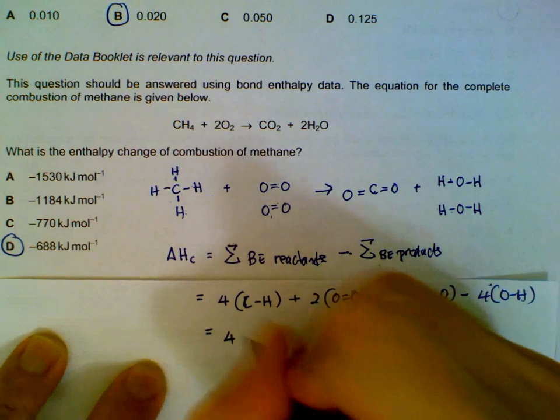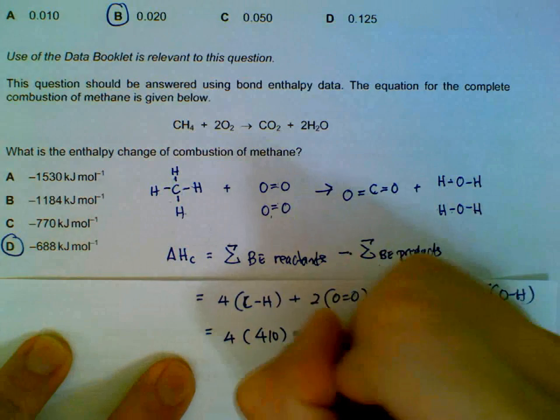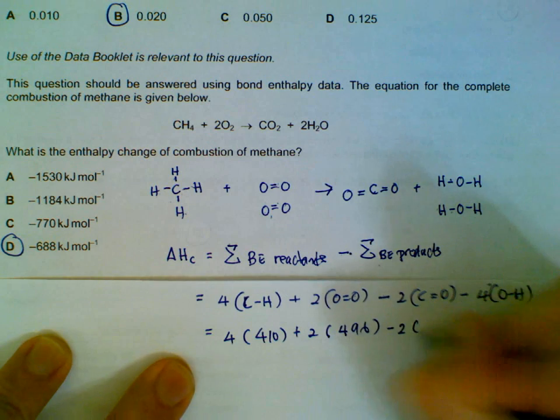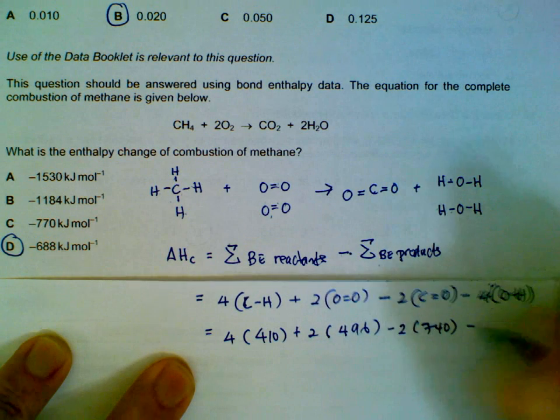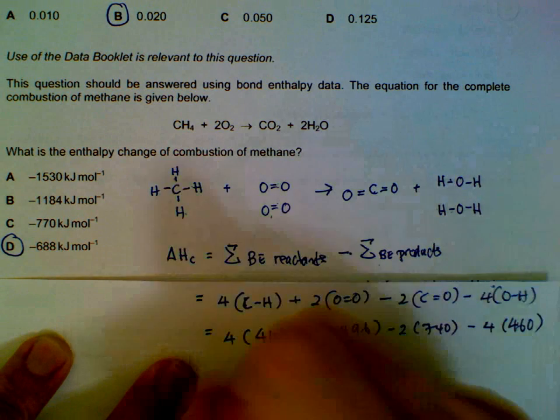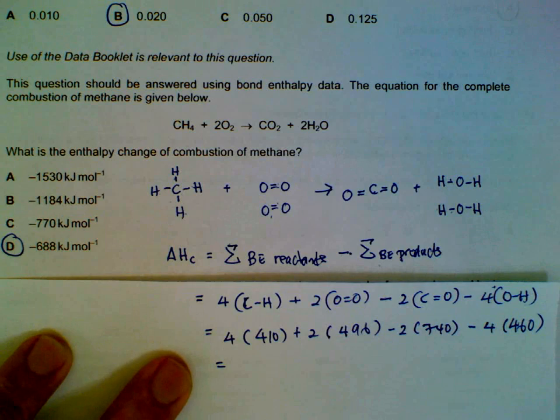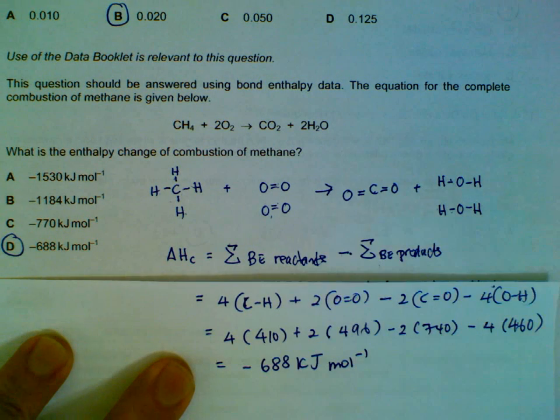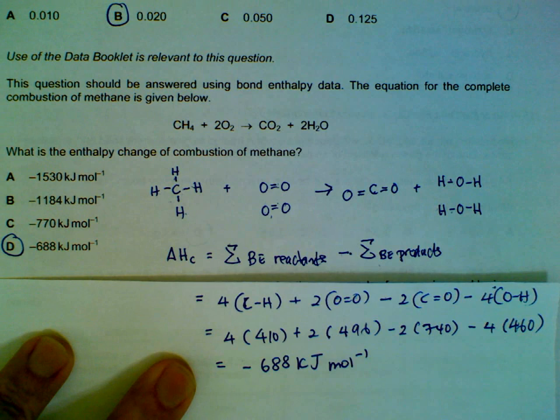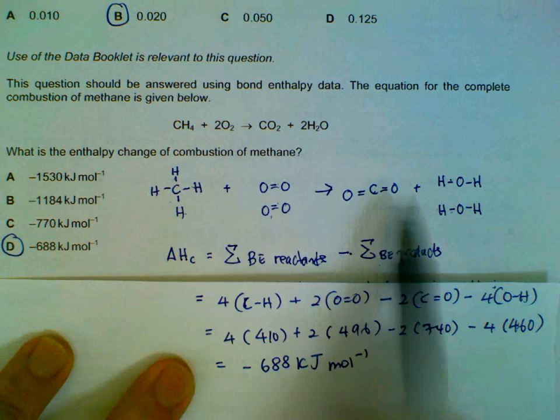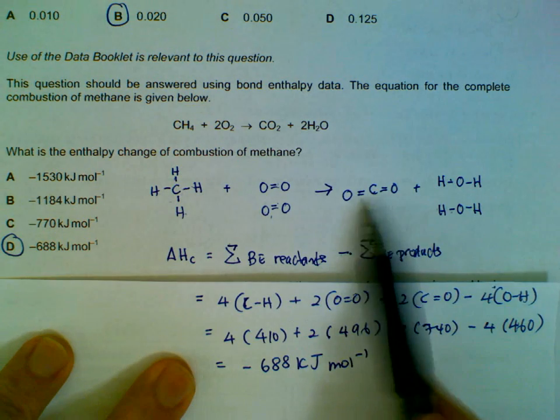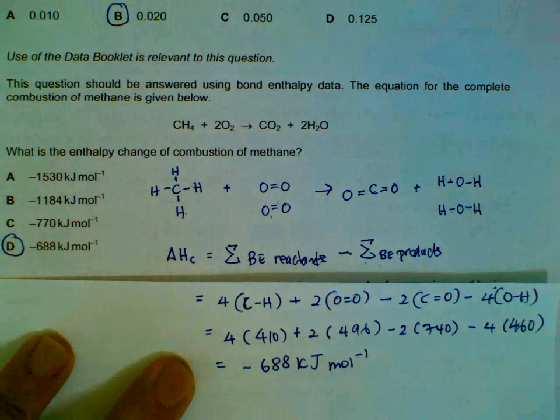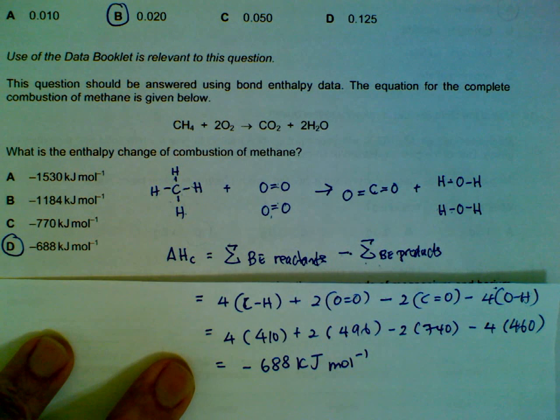And checking the data booklet for all the numbers, we have 410, 496, 740 for the CO and 460 for the OH. And then you use your calculator, you will come to a number that is minus 688 kilojoules per mole. So you can draw out the molecules and the types of bonds that you need to break and the types of bonds that will be forming. And then you take the bond energy of the reactants minus the bond energy of the products.